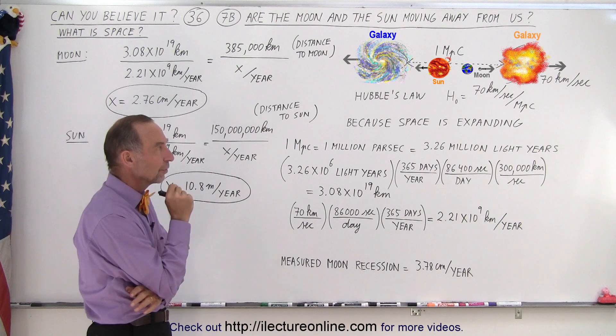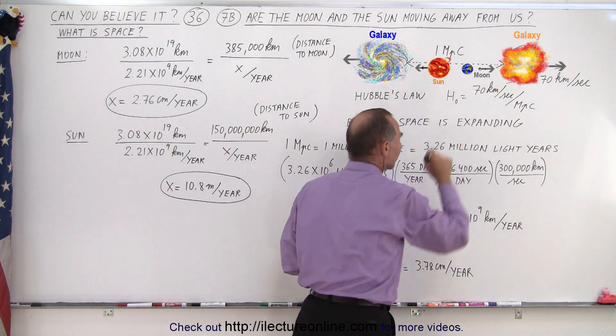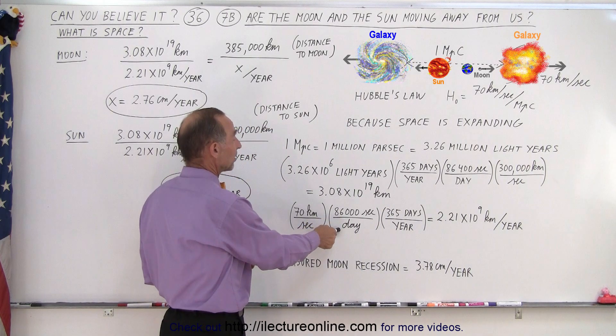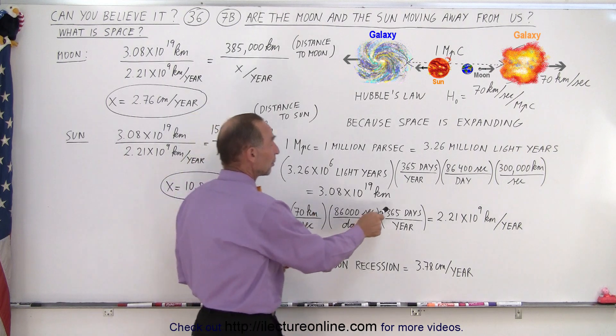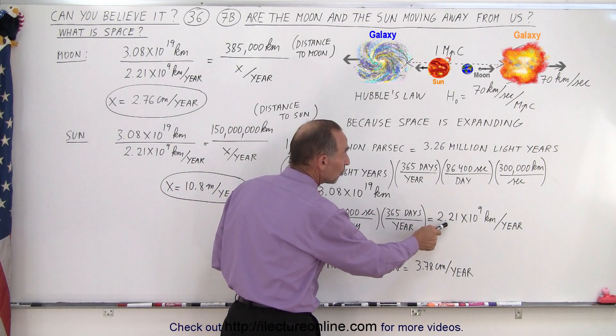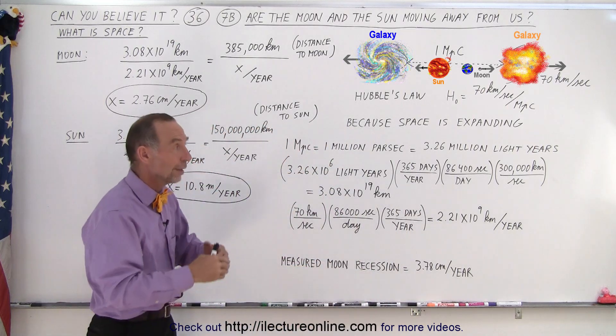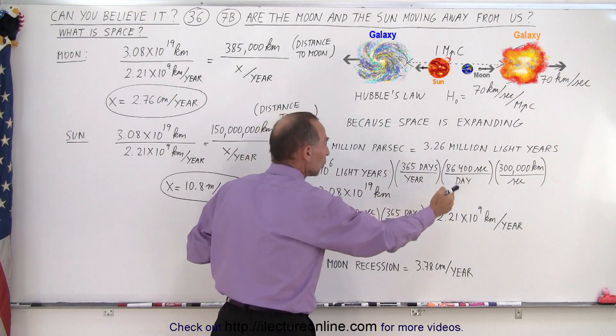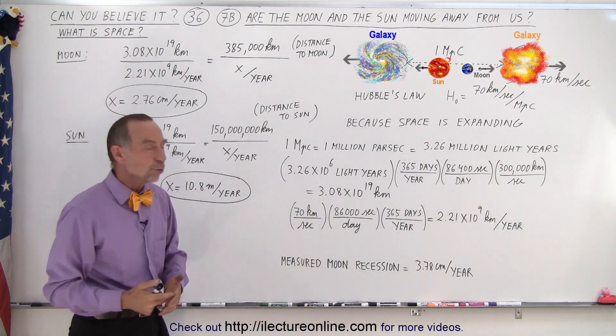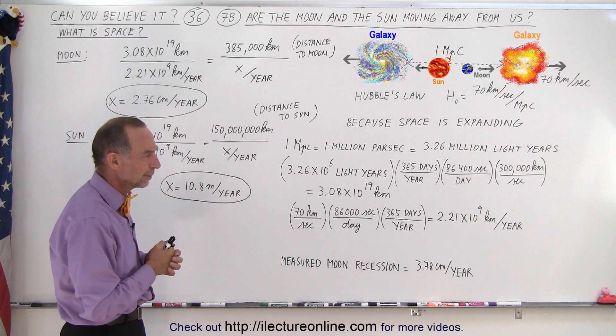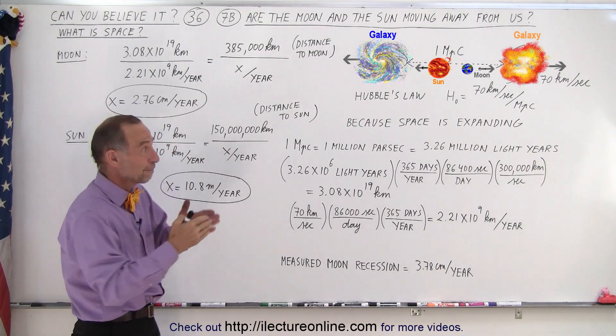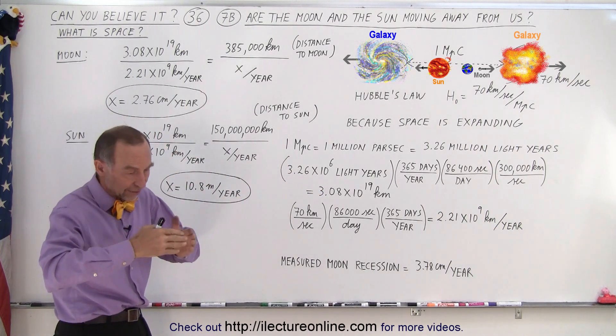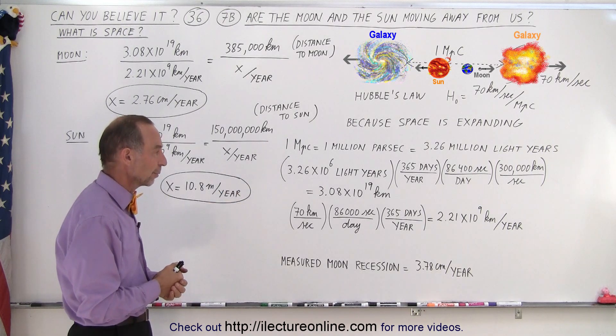So if something is moving away from us at 70 kilometers every second, how far is that in a year? We take 70 kilometers per second, multiply times 86,000 seconds in a day, 365 days in a year, and it turns out it's 2.2 billion kilometers per year. So galaxies that are 1 million parsec apart from one another will travel away from each other at about 2.2 billion kilometers per year. Now 2.2 billion kilometers is not a lot compared to 3.26 million light years, but it's significant, and yes we can see that galaxies are indeed all moving apart from one another.